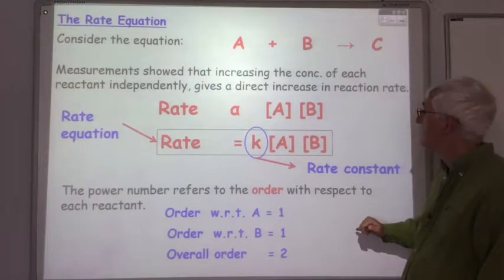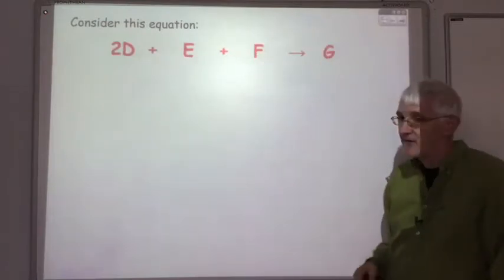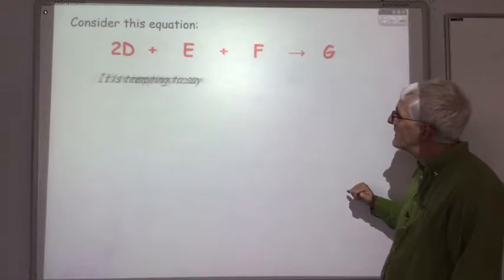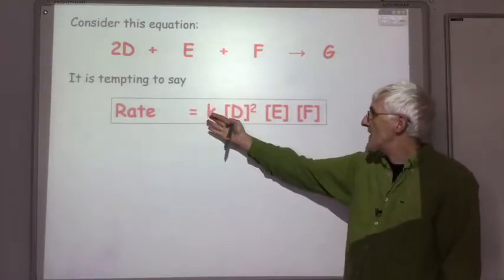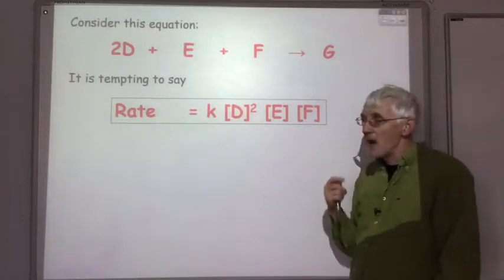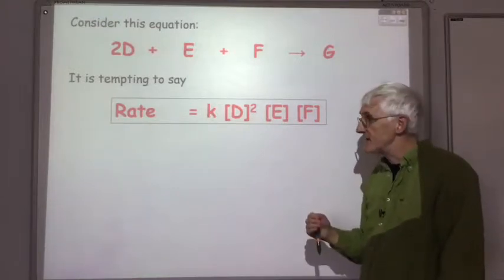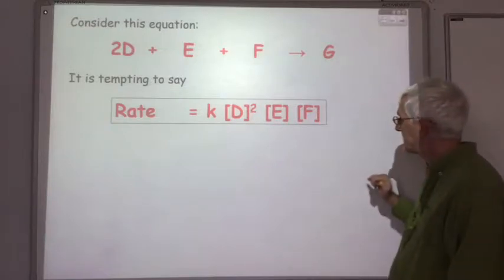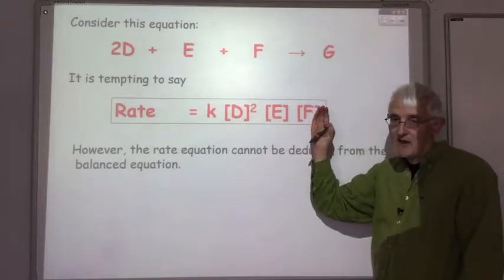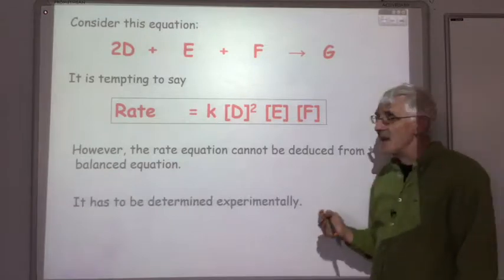Let's look at another reaction: 2D plus E plus F reacting to give G. One would be tempted to say that the rate equation is rate equals K times D squared times E times F, based on the stoichiometry of the balanced equation. However, the rate equation is always based on measurements. The rate equation cannot be deduced from the balanced equation — it may be right or it may not be right. The only way to find out is to determine it experimentally.